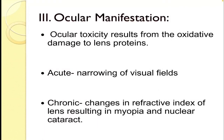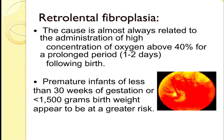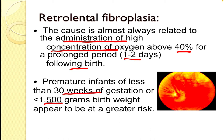The next important manifestation is ocular toxicity, due to oxidative damage to the lens protein. In acute conditions, narrowing of the visual fields occurs, and in chronic conditions, there are changes in the refractive index of the lens, resulting in myopia and nuclear cataract. Another important manifestation is retrolental fibroplasia, commonly seen in premature babies receiving oxygen therapy. It is almost always related to administration of high concentrations of oxygen above 40% for a prolonged period of 1–2 days following birth. Premature infants of less than 30 weeks gestation or less than 1500 grams birth weight appear to be at greatest risk, and this process is reversible, so it is not a sole criterion to restrict the use of oxygen therapy.